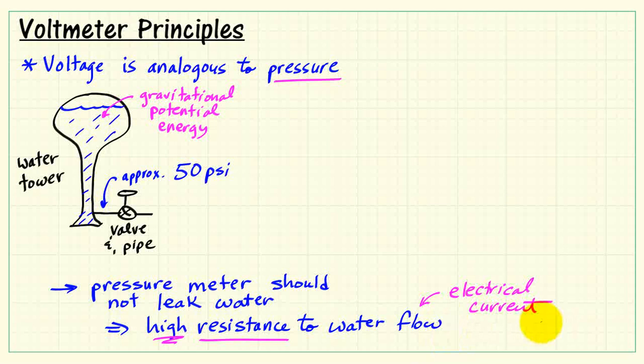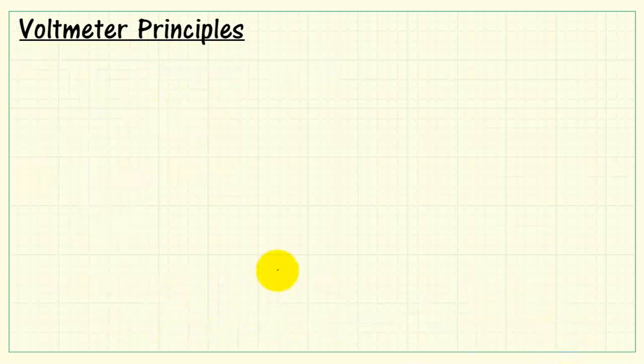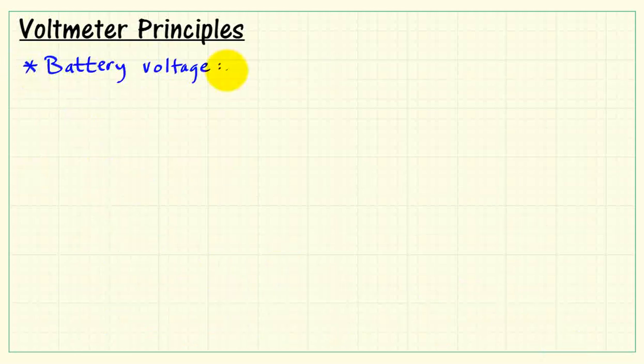If we think of water flow as being analogous to electrical current, that gives us an idea that a voltmeter also is a high-resistance device.